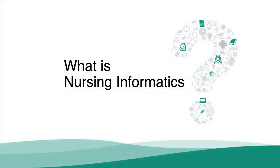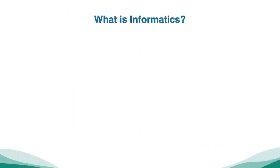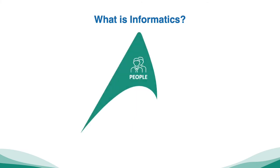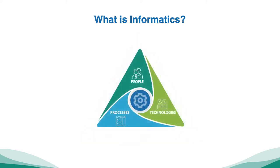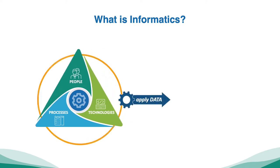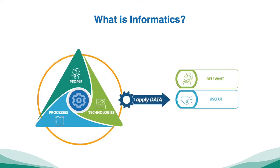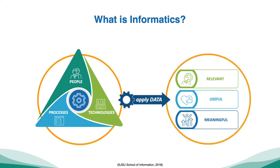What is Nursing Informatics? Before we take a close look at what Nursing Informatics is, let's define the term Informatics first. At its core, Informatics refers to an interrelated activity involving people, technologies, and processes. This interconnected triad allows trusted data to be applied in a manner that is relevant, useful, and meaningful. Although there are three fundamental components in Informatics, the interrelated activities are essentially centered around information needs of people as end-users of technologies.